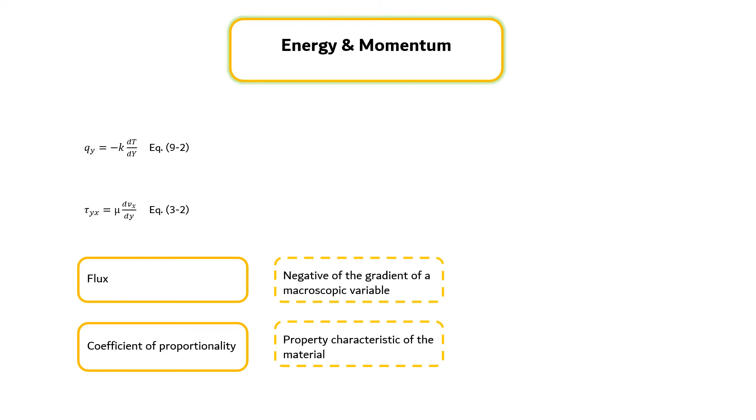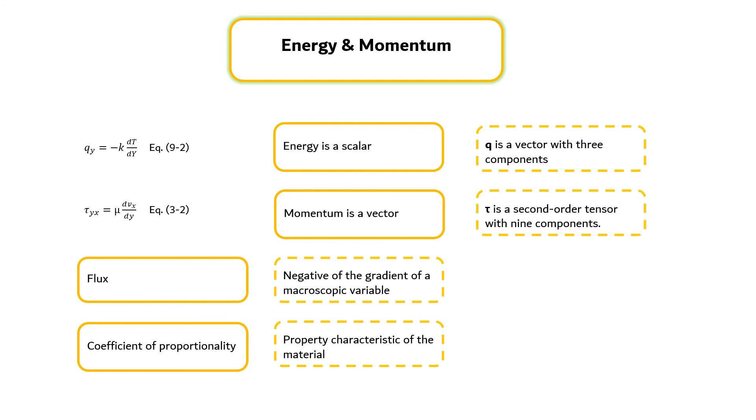For the situations in which there is three-dimensional transport, the equation for heat conduction differs in appearance from that for viscous flow. This difference arises because energy is a scalar, whereas momentum is a vector. The heat flux is a vector with three components, whereas momentum flux is a second-order tensor with nine components. We can anticipate that the transport of energy and momentum will, in general, not be mathematically analogous except in certain geometrically simple situations.